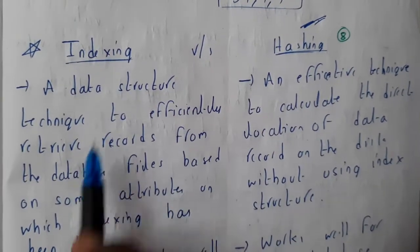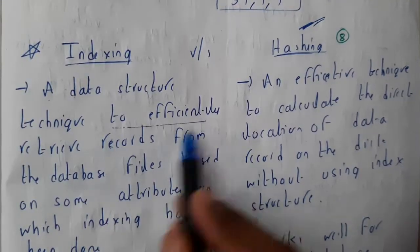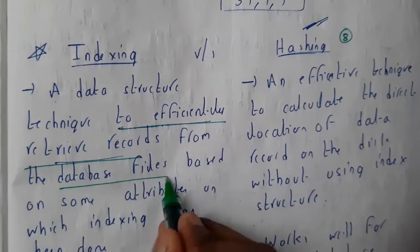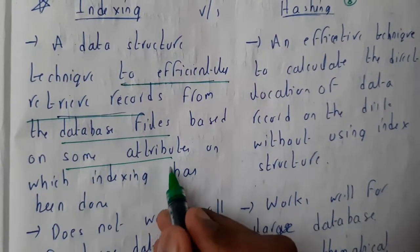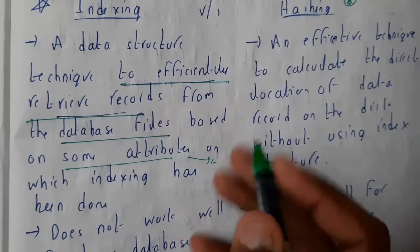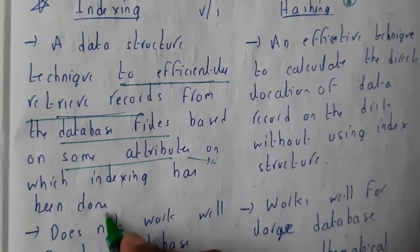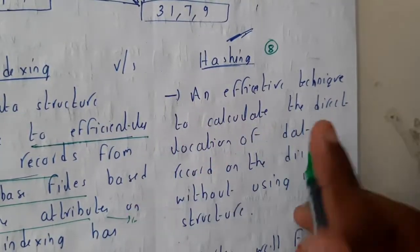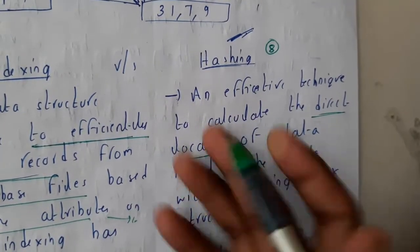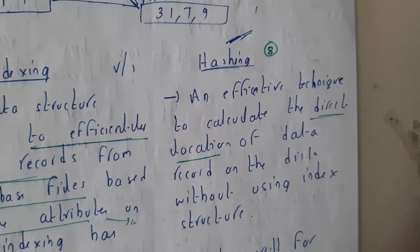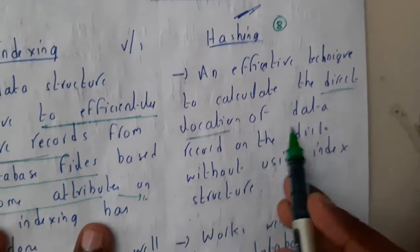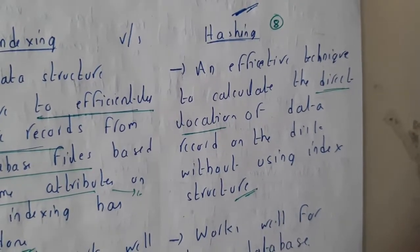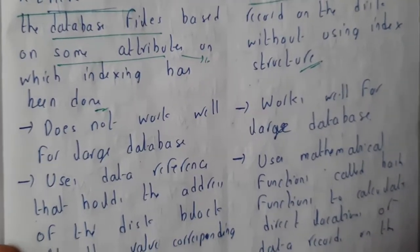Indexing is a data structure technique to efficiently retrieve the records from the database files based on some particular attributes. We use key ordering and those things, which are our attributes, done using the help of indexing. Whereas hashing is an efficient technique to calculate the direct location of the data records on the disk without using the index structure. That is the main difference between these two.